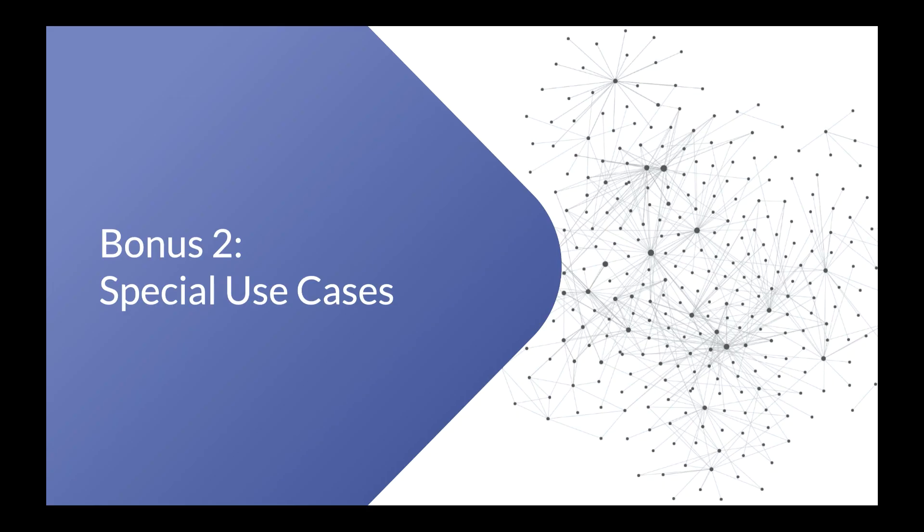In the second bonus unit, we'll go over some special use cases — like writing a newsletter in Roam, organizing recipes, creating a personal CRM. These are all great ways to use Roam that won't be covered in the core section, but that will expand how you think about making the most of the tool.